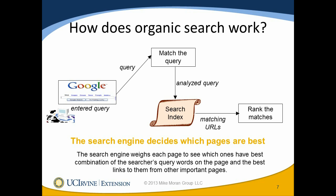One popular technique is called latent semantic indexing, which understands that when words tend to appear next to other words in normal usage, seeing unusual word combinations indicates a particular concept. When people type in those words or related words, that helps the search engine identify the right pages.